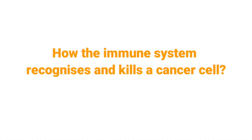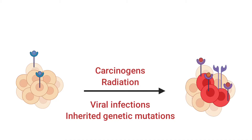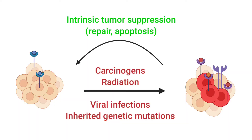How does the immune system recognize and kill cancer cells? Normal cells exposed to carcinogens, radiation, viral infections, or inherited genetic mutations may change into transformed cells. These processes can be reversible if tumor suppression mechanisms such as DNA repair and apoptosis are active.